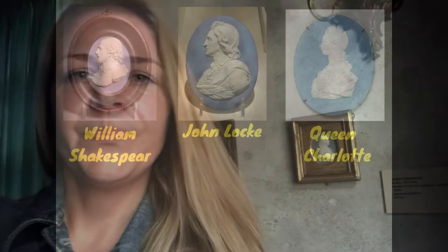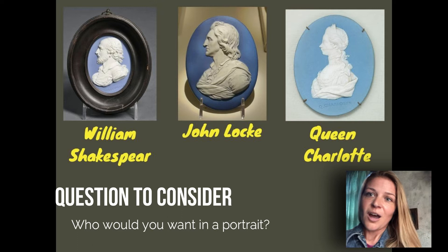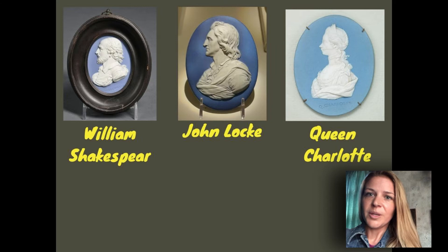It was popular at the time to collect portraits of different prominent people, and people could even have one commissioned of a family member. Now, Josiah Wedgwood knew the person in this portrait, and the person in the portrait is named Carl von Linnaeus. He was a very prominent biologist, scientist, and researcher.